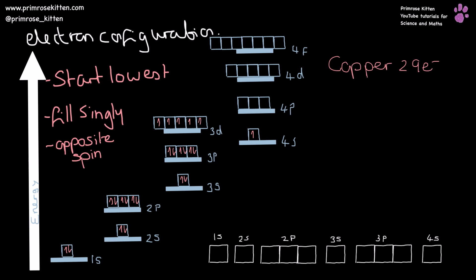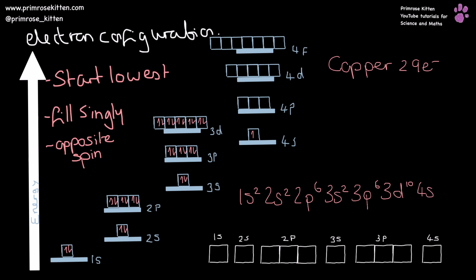...23, 24, 25, 26, 27, 28, 29. Just like chromium, even though the 4s subshell isn't fully filled, I've moved up and filled the 3d subshell completely — because this gives copper a more stable electronic configuration than having 4s full and only nine electrons in 3d. So those are the exceptions to the rules: the reason they do it is to become more stable. Copper's configuration is written as: 1s² 2s² 2p⁶ 3s² 3p⁶ 3d¹⁰ 4s¹.